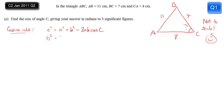Side c is 11, so 11² is equal to a, which is 7², plus b², which is 8², minus 2 times 7 times 8, times cos of angle C. Commonly marks can be dropped in these questions by poor rearranging, so work out all the squares and all the multiplications first and fill them in.